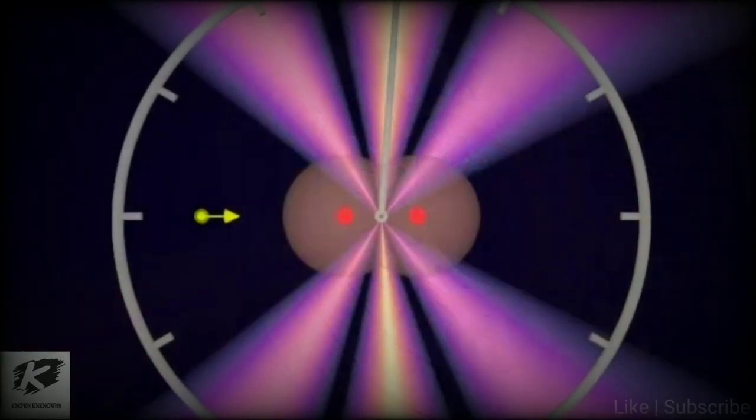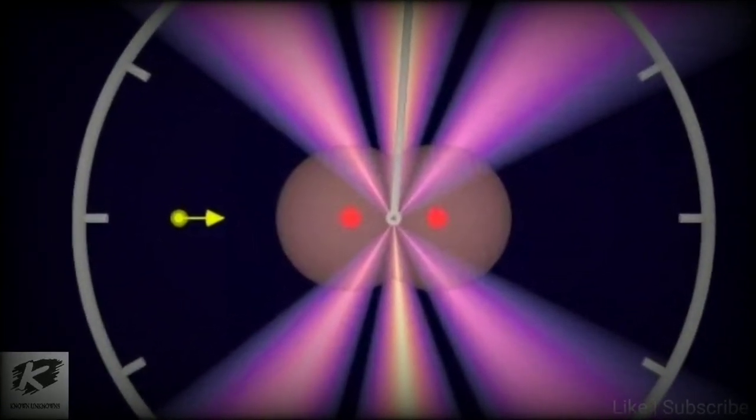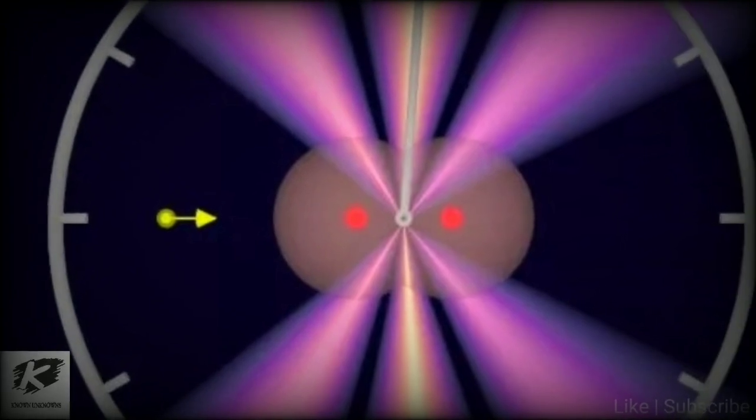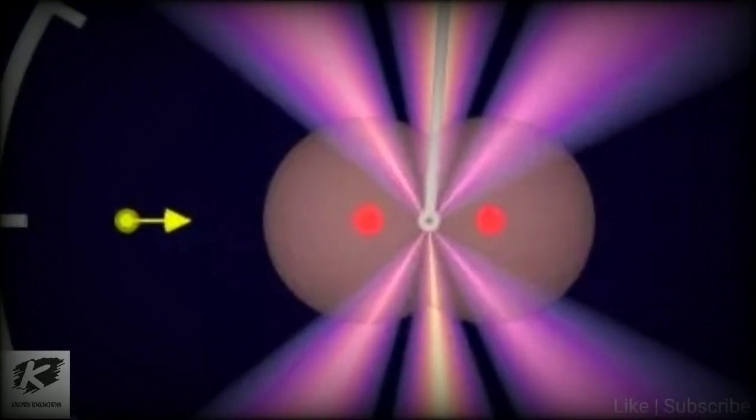The researchers set the energy of the x-rays so that a single photon, or particle of light, knocked the two electrons out of the hydrogen molecule. A hydrogen molecule consists of two protons and two electrons. The photon bounced one electron out of the molecule, and then the other, a bit like a pebble skipping over the top of a pond.